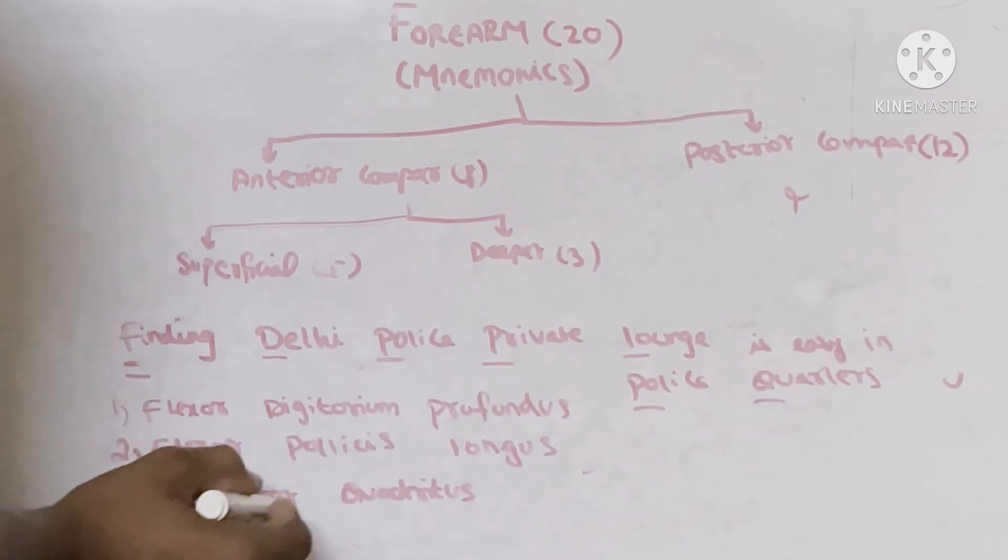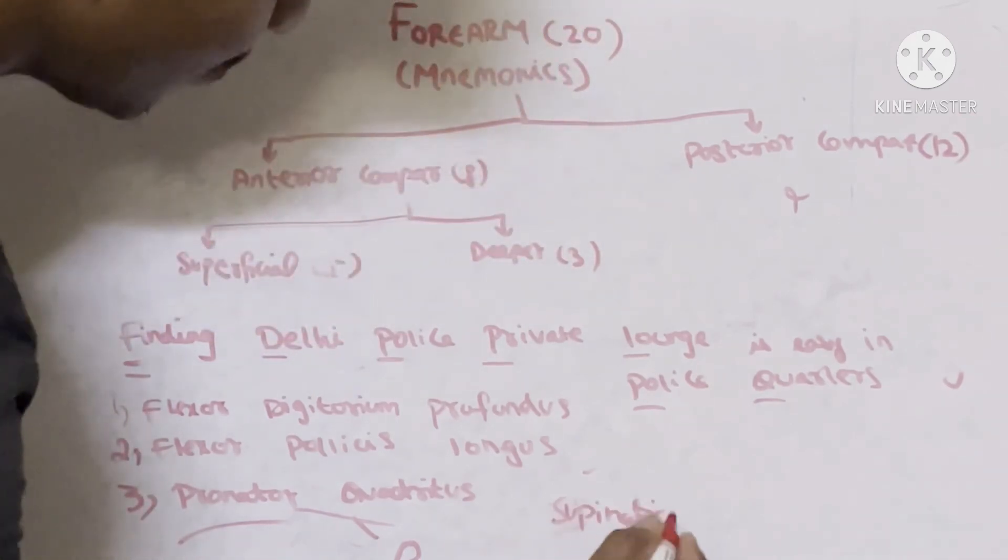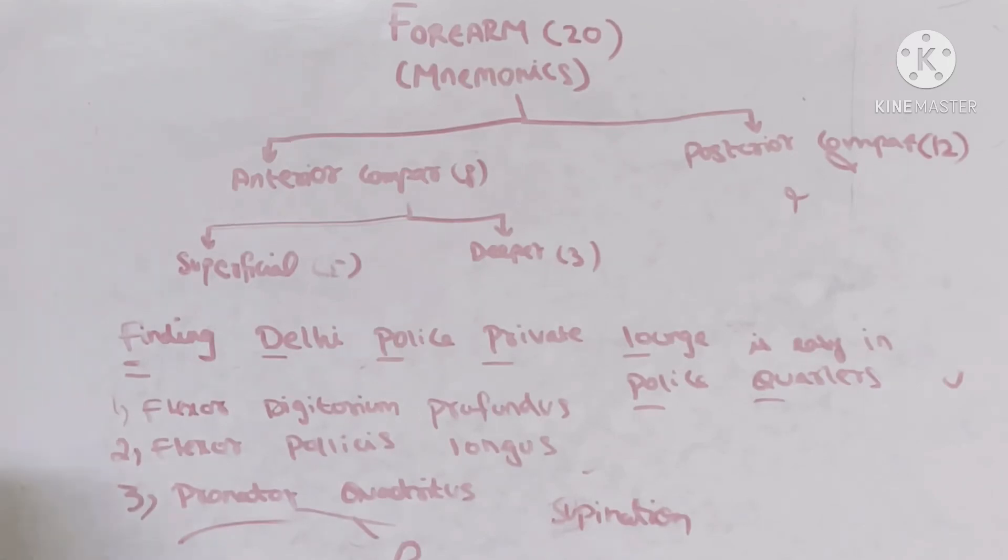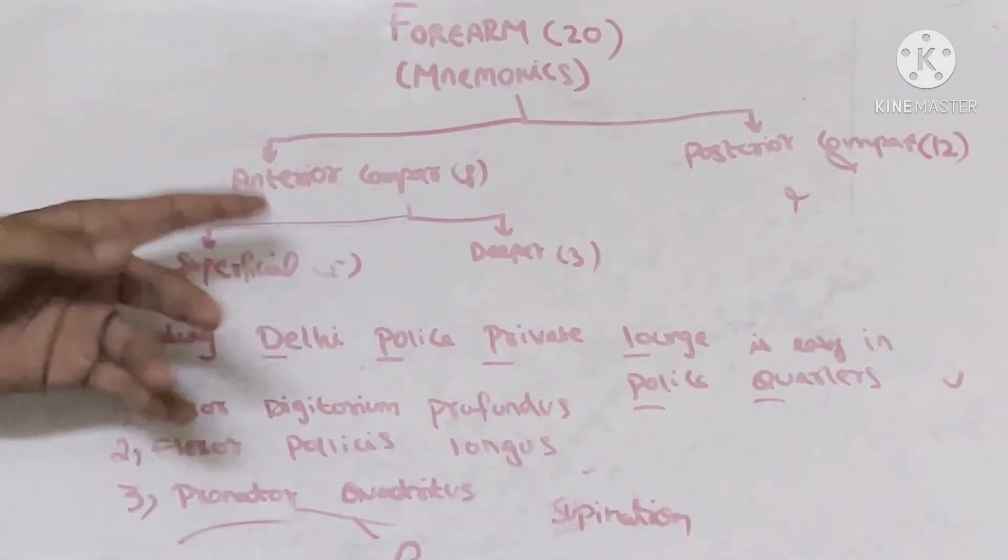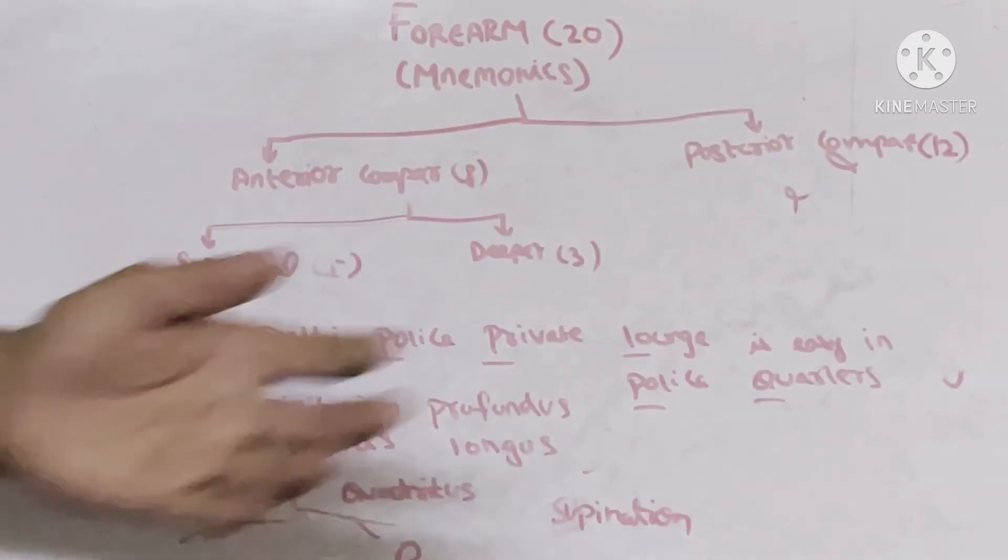Just for extra knowledge, again here pronator quadratus muscle helps in the process of pronation and the muscle that helps for supination comes into action of posterior compartment of forearm muscle. So this is the mnemonic, simple mnemonics on forearm muscles anterior compartment. Keep subscribed and keep updated for getting posterior compartment and rest of the muscles of upper limb. Thanks for watching.